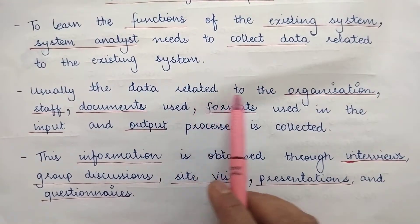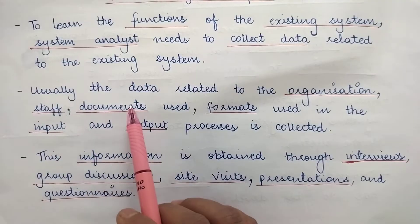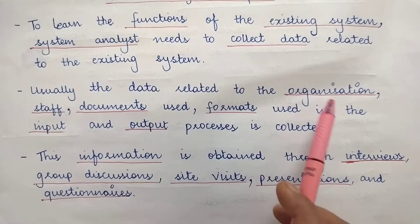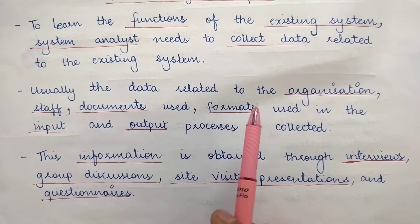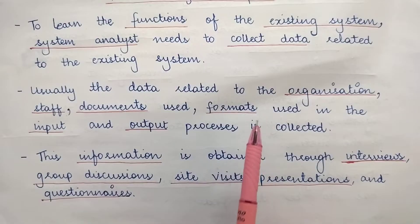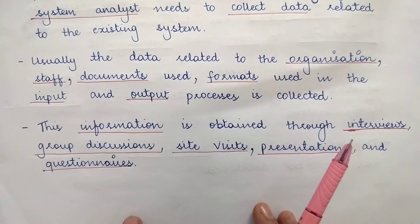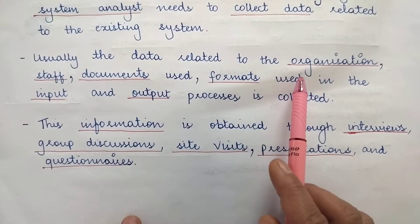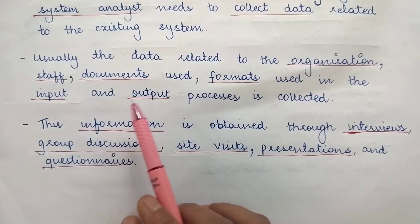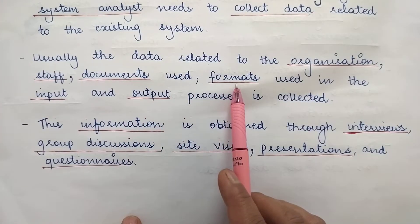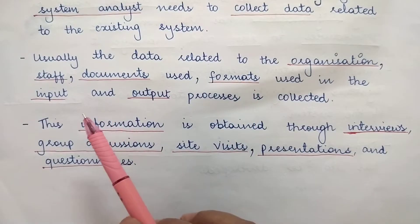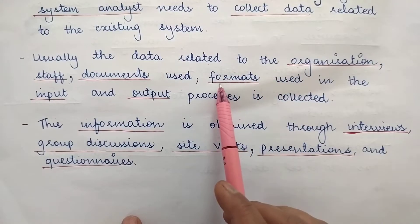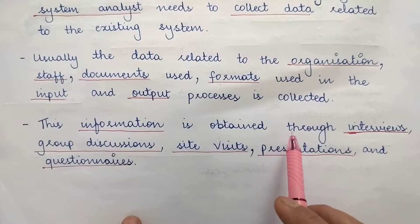Usually, the data related to the organization, staff, documents used, and formats used in the input and output processes is collected. All this together helps the system analyst know about the functions of the existing system. There is a technique of gathering all this information — the data about the organization, the staff, the documents and formats used, and the various input and output processes. In order to collect all this data, there are various techniques.